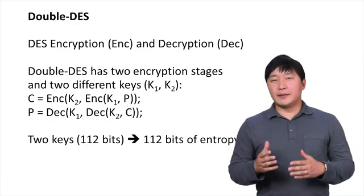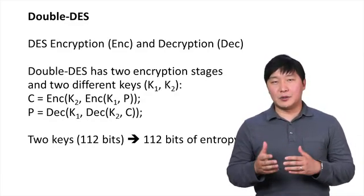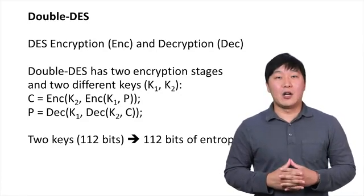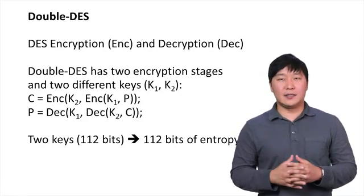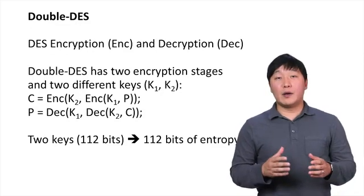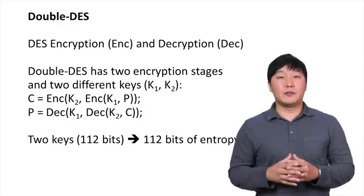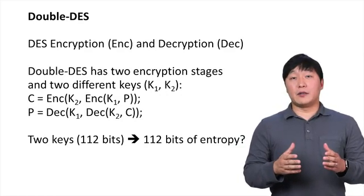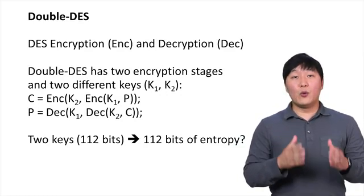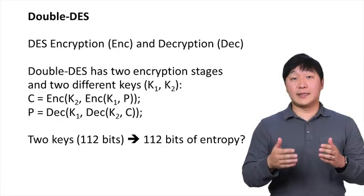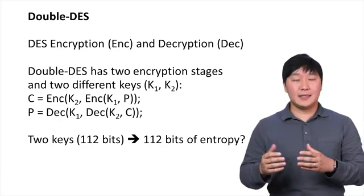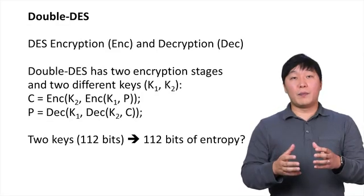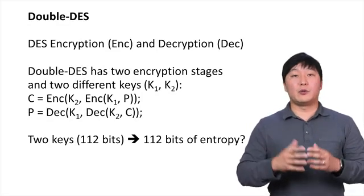The use of two independent keys, k1 and k2, which are 112 bits long — twice as long as a single key — can provide 112 bits of entropy for the ciphertext. So the computational effort of a brute force attacker who only analyzes the Double DES input and output, p and c, will grow by O(2^112).